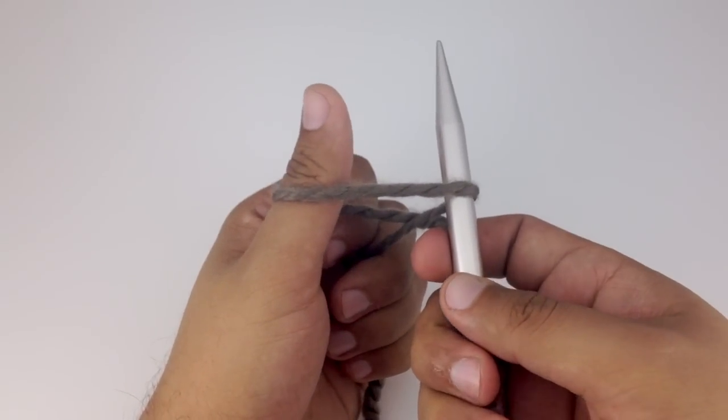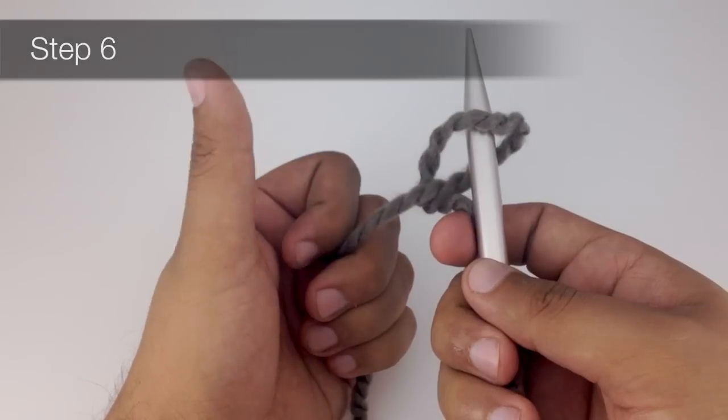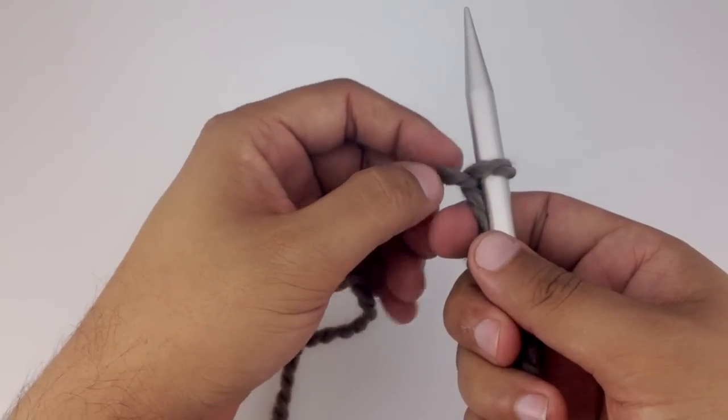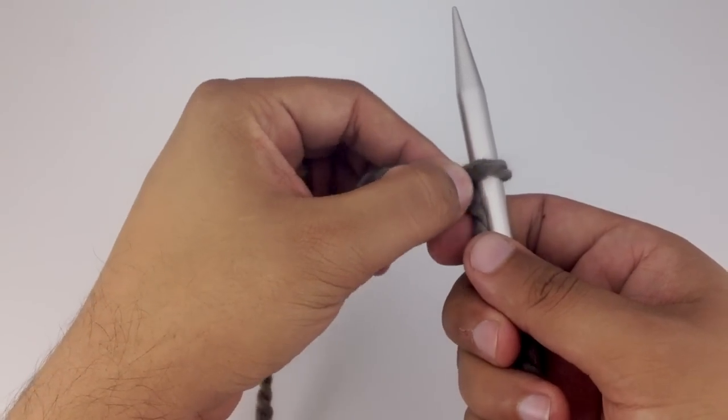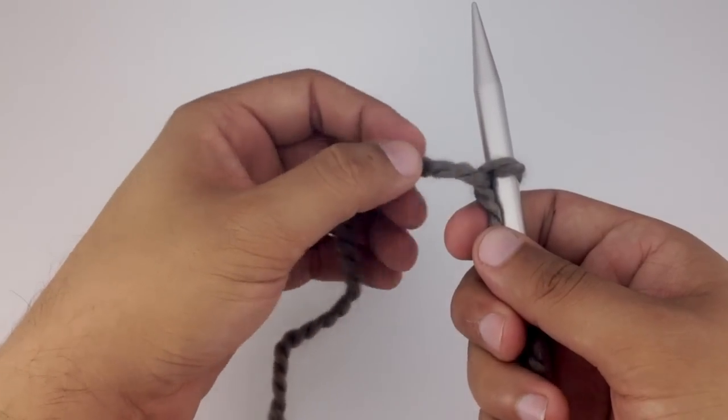For step six, we're just going to release the loop from our thumb and tighten that down. Now we don't want to tighten this too tight—we just want there to be a little bit of tension on the knitting needle from the loop.